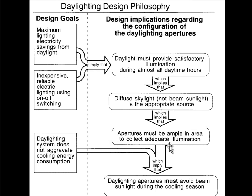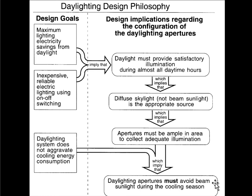The fact that we're relying on diffuse skylight means the apertures must be ample in area to collect adequate illumination, because diffuse skylight is only about a tenth as strong as beam sunlight. Ample means approximately 20% of the floor area provided in the form of glazing. This is a rough number which holds pretty well. And when you have ample areas of glazing like that, the last thing you want to do is orient them wrong so that your daylighting system starts to aggravate the cooling energy consumption. So folding all that together, the daylighting apertures must avoid beam sunlight during the cooling season.